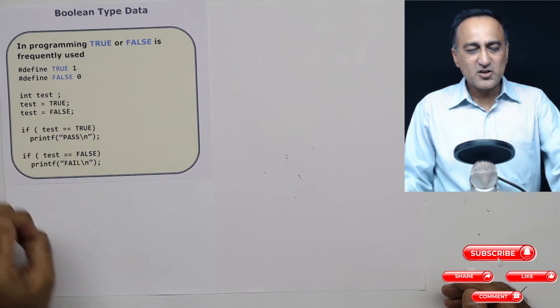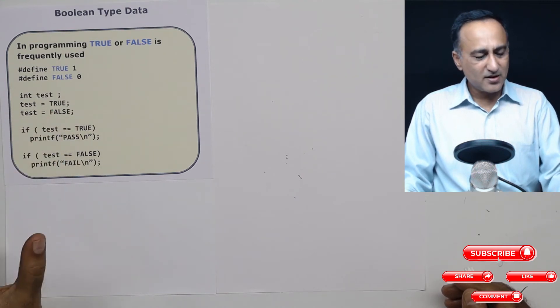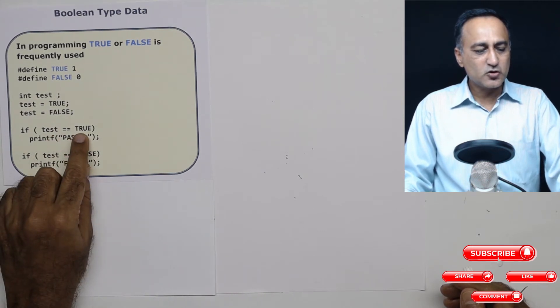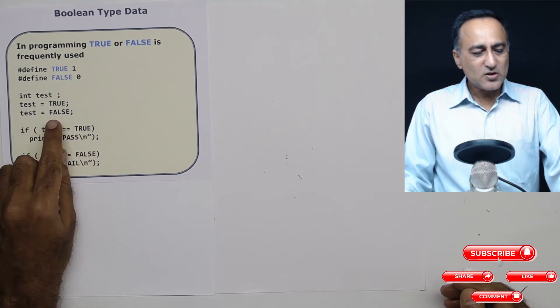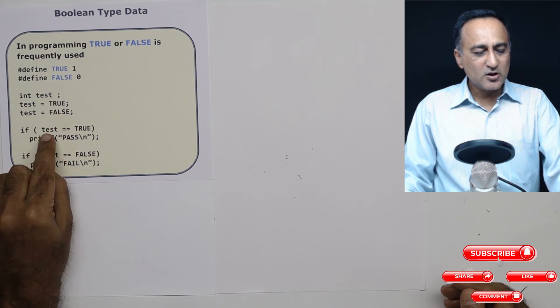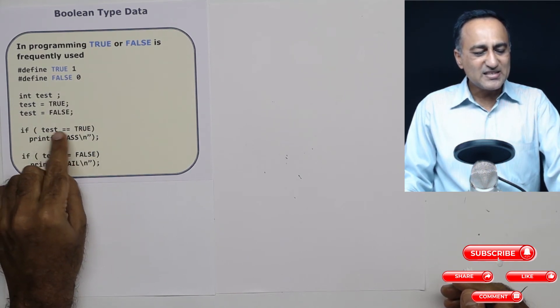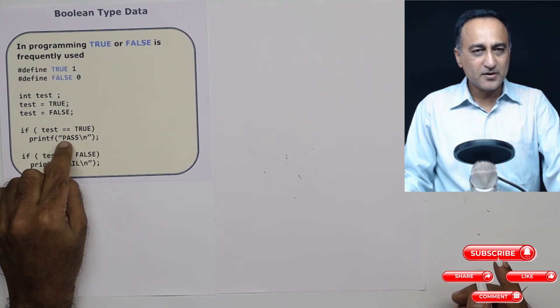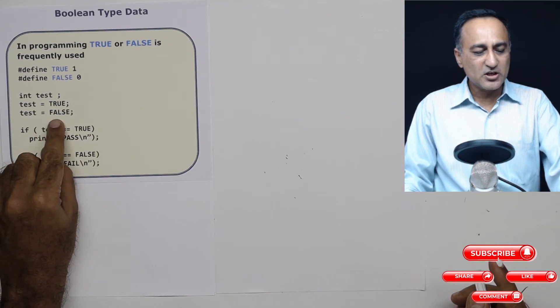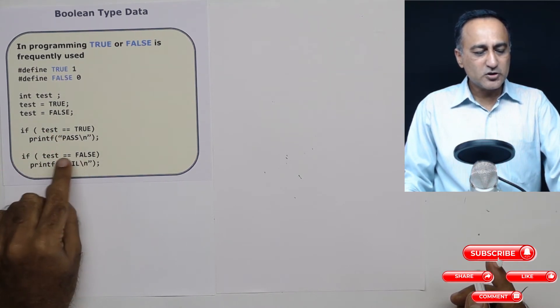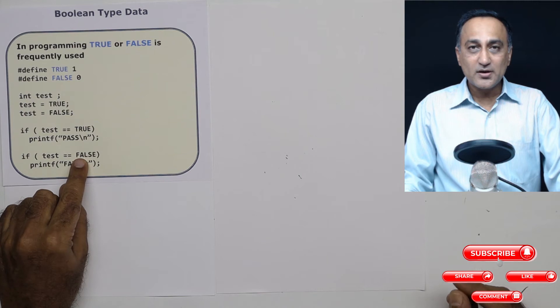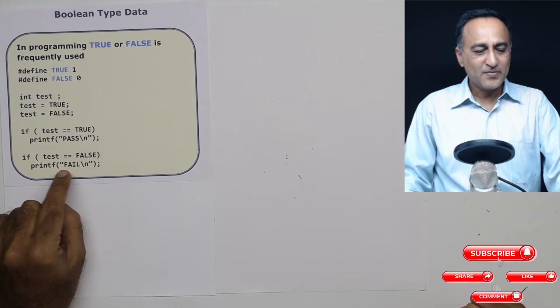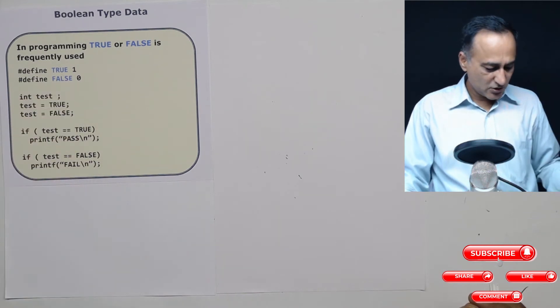Suppose I had this if condition, we're running a little ahead, but it's not too difficult to understand. I'm comparing the value of test with true. So since I've changed the value of test to zero, zero is compared with true, which happens to be one. Is zero equal to one? It is not equal to one. So nothing will be printed here. Here it will come test is now zero. False is also zero. Is zero equal to zero? It means it is true or yes, then it's going to print this message fail. So this is how true and false is used in programming.